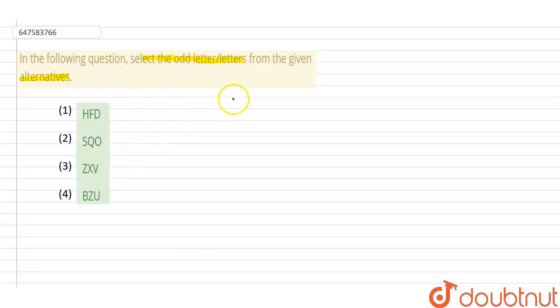So guys, first of all, let's see HFD. What is the logic of this? If we do H minus 2, we will get F. In this way, F minus 2, we will get D.